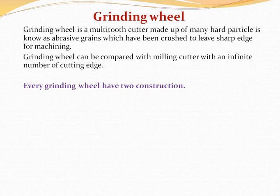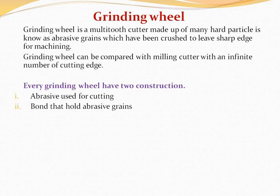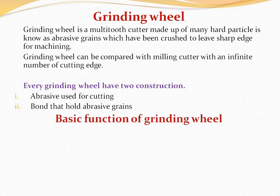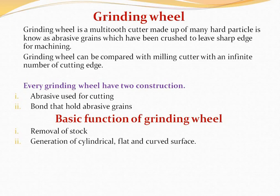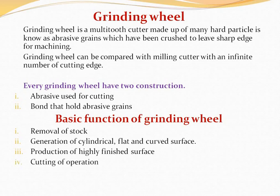Every grinding wheel has two constructions: the first is abrasive used for cutting, and the second is bond that holds abrasive grains. The basic functions of grinding wheel are: removal of stock, generation of cylindrical, flat and curved surfaces, production of highly finished surfaces, cutting operations, and production of sharp edges and points.